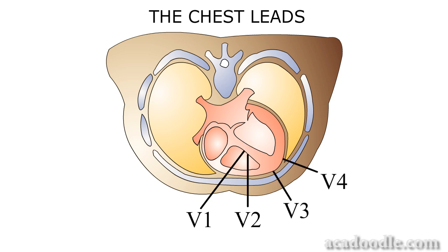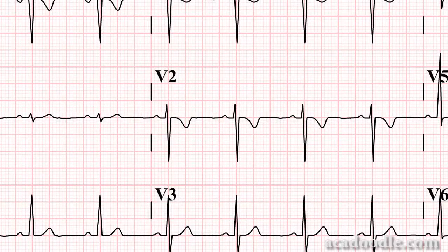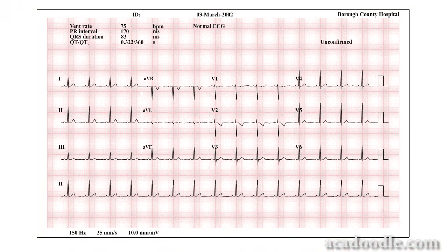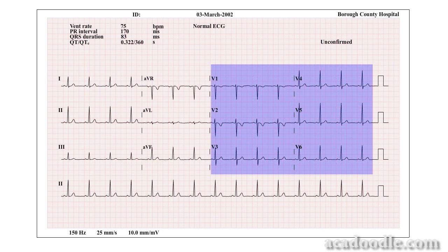V3 and V4 face the anterior wall of the left ventricle, while V5 and V6 face the lateral wall of the left ventricle. Modern machines present the printed ECG readout landscaped on an A4 piece of paper, and the signal from each of the chest leads is recorded on the left-hand side of this A4 ECG readout, in numerical order, as shown here.